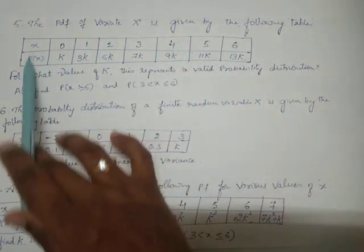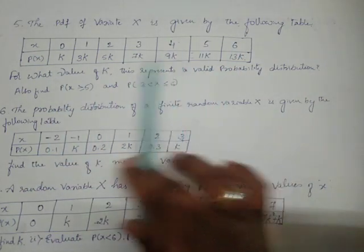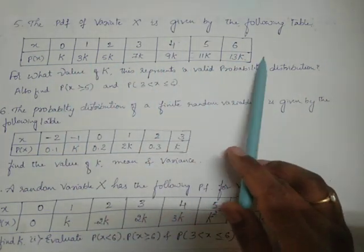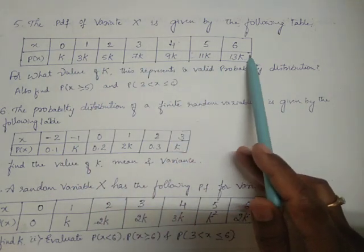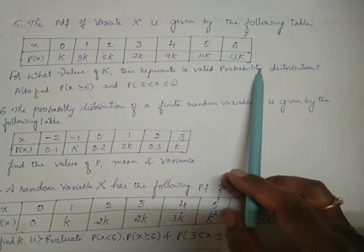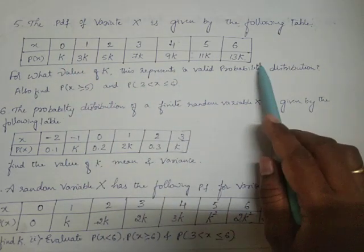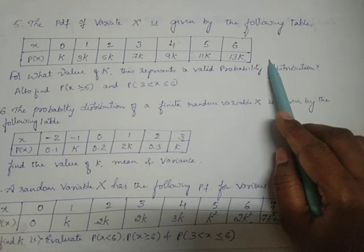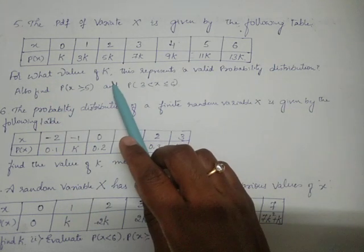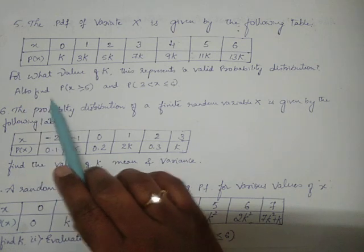To make this a valid probability distribution, the summation must be equal to 1 and each single value must be greater than or equal to 0. So add all these things - that must be equal to 1. By solving that equation you will get the value of k. So the first part will be over.